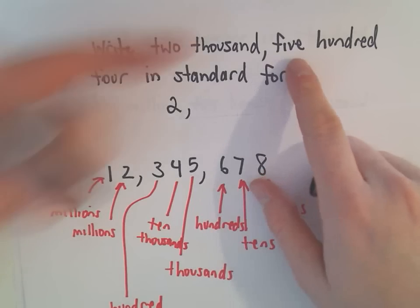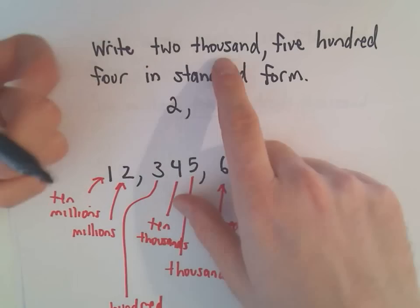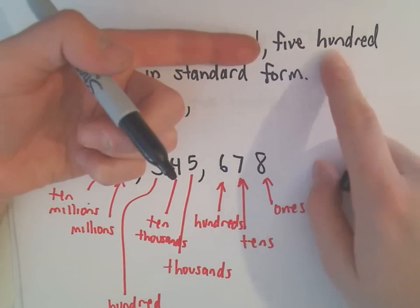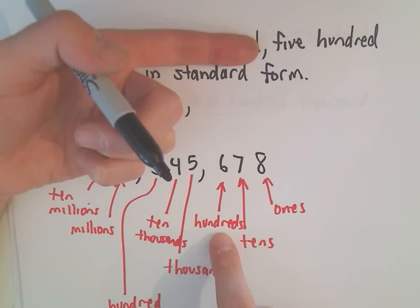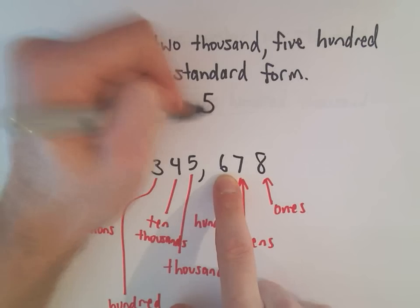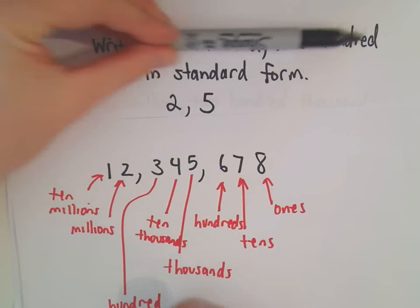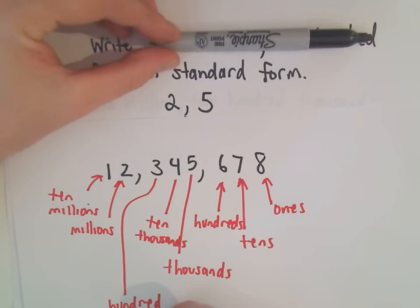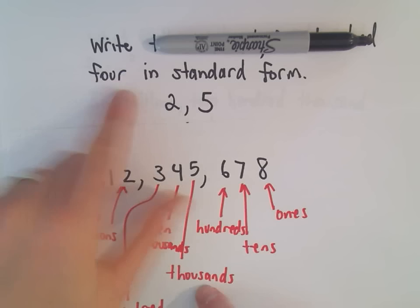And then the next part is kind of smaller than the thousands. So we have 500. So I think, well, the hundreds, instead of a 6, since it's 500, we're going to put a 5 right there.